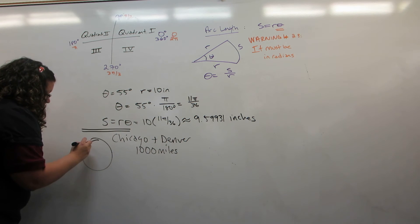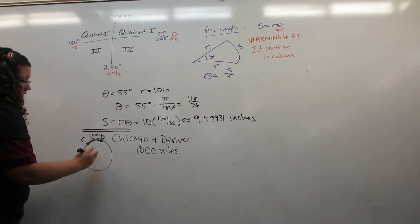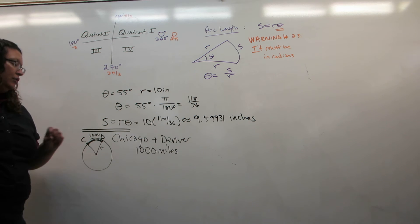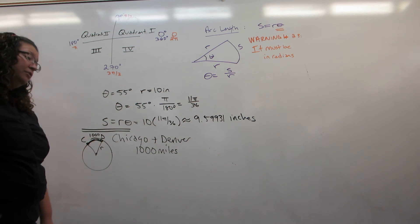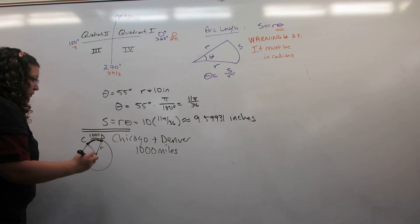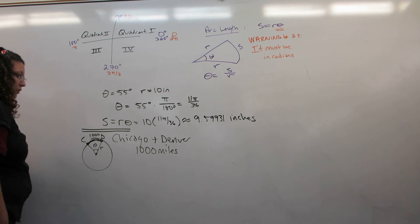So, consider the earth. We have Chicago and Denver and the arc length is a thousand miles. Now, we are going to use this information to calculate the radius of the earth to pretty good accuracy. But of course, we're going to need the angle.